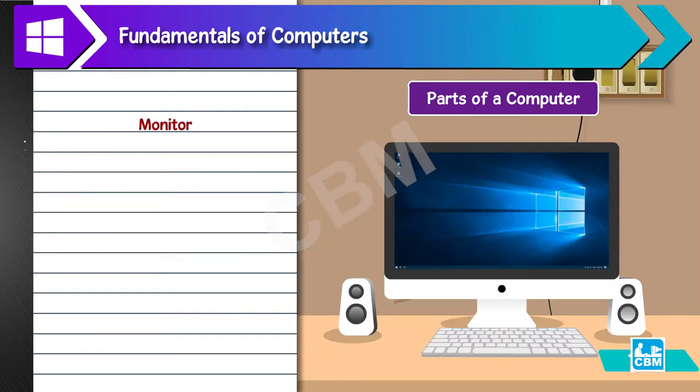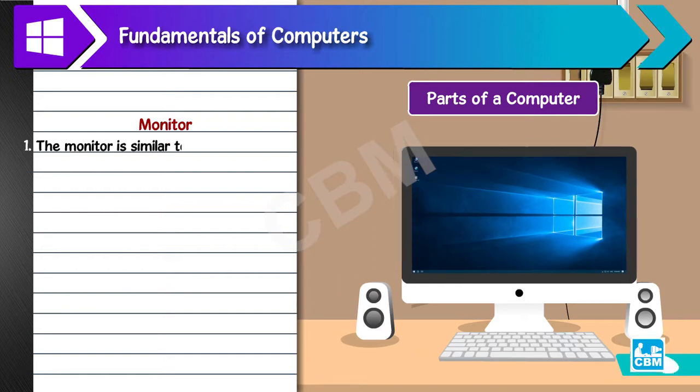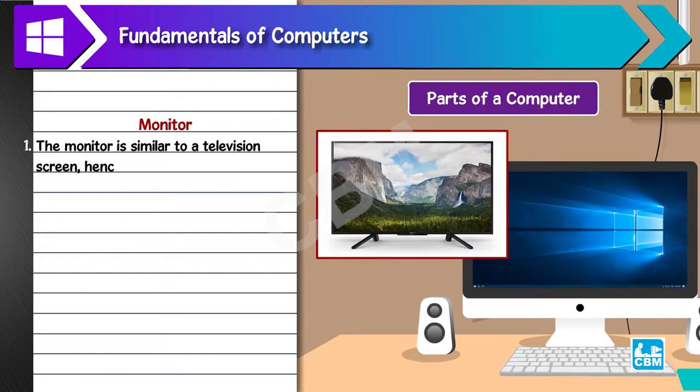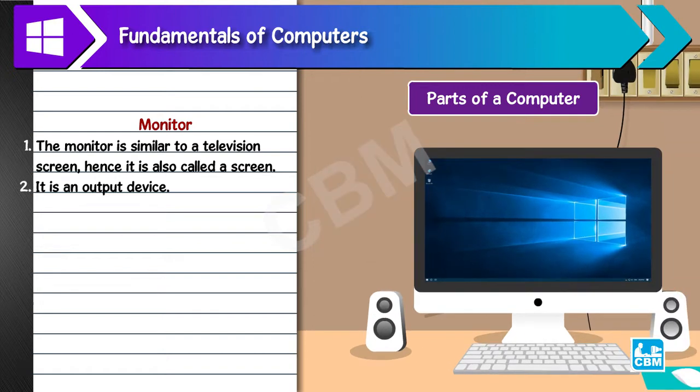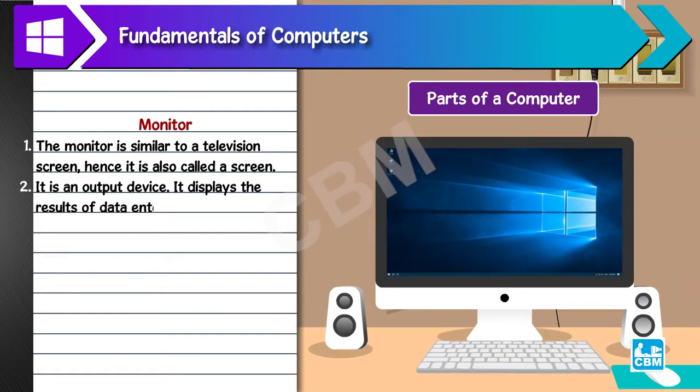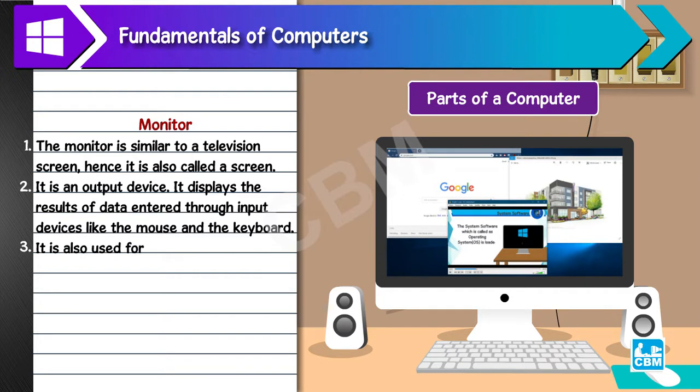Monitor: 1. The monitor is similar to a television screen, hence it is also called a screen. 2. It is an output device. It displays the results of data entered through input devices like the mouse and the keyboard. 3. It is also used for viewing web pages, photos and videos.